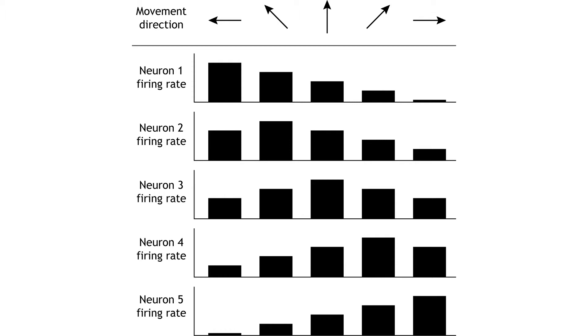For example, neuron 1 in the figure shows the highest firing rate when movement of the hand is to the left and a low firing rate when the hand is moving to the right, whereas neuron 3 fires the most when the movement is forward. Neurons tuned to other directions will also be active but at lower rates. This means that the firing rate of one specific neuron does not give enough information to know direction of movement. It is the combined firing rates of an entire population of neurons that indicates direction.